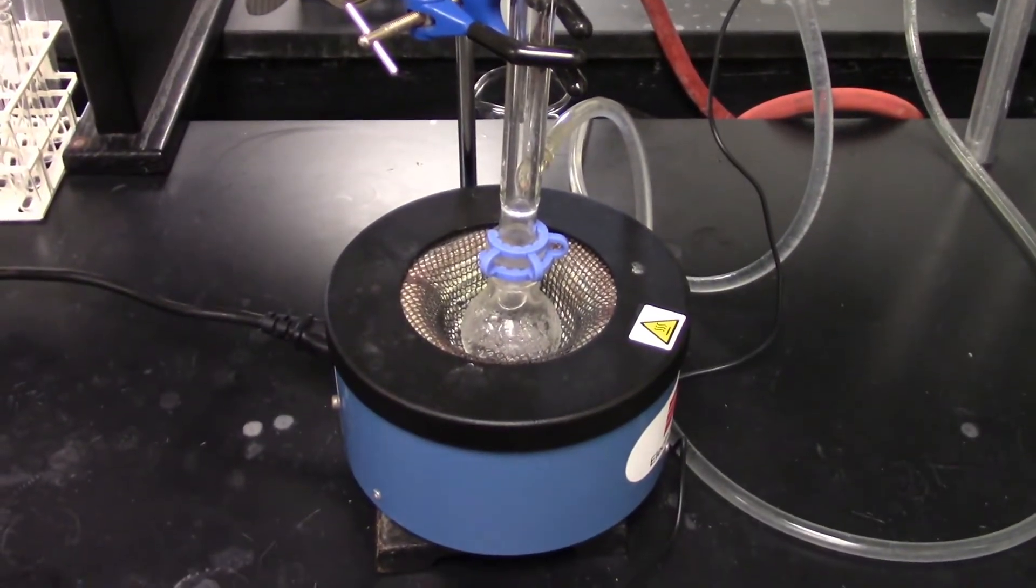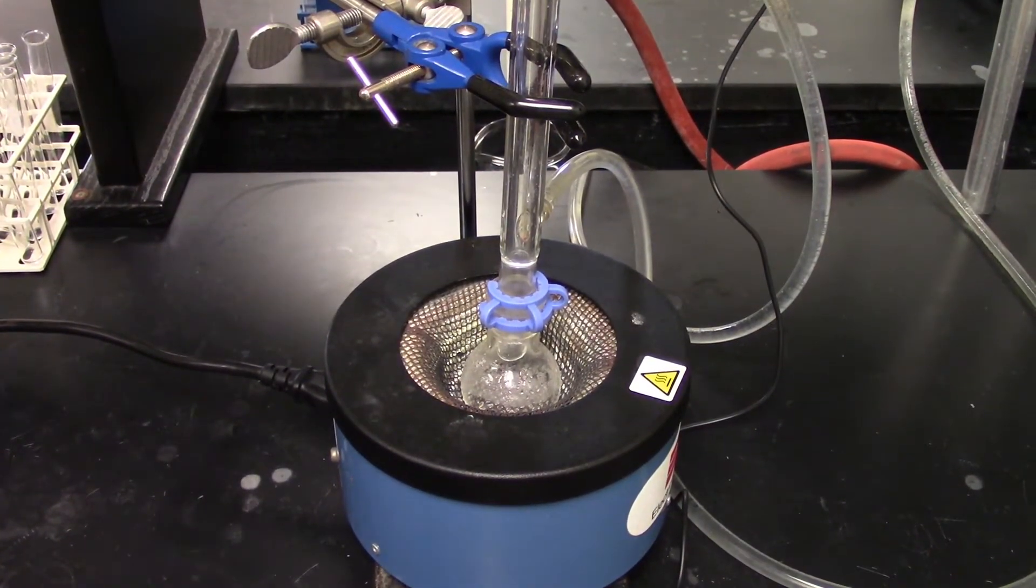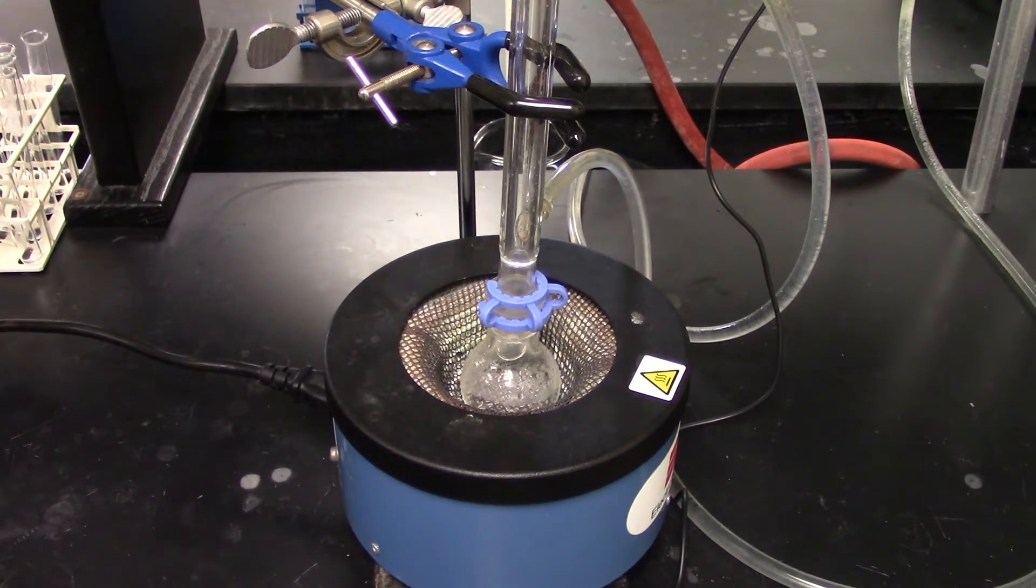So now we've still got the liquid in there, but what we're going to do now is turn the power down to 40%. What we don't want to do is burn this material. So now that we've got it to the boiling starting, we're just going to maintain the heat here to ensure that it continues to decompose for another 25 minutes.